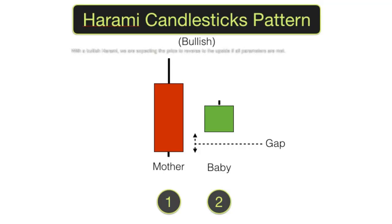With a bullish Harami, we are expecting the price to reverse to the upside if all parameters are met. To identify a bullish Harami candlestick formation, the first candlestick must be a long red bearish candlestick, indicating strong selling pressure.